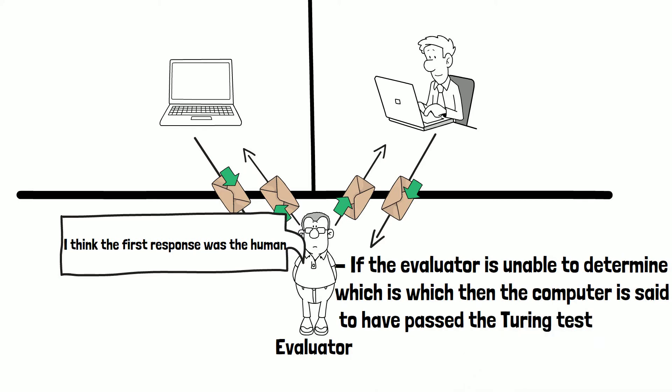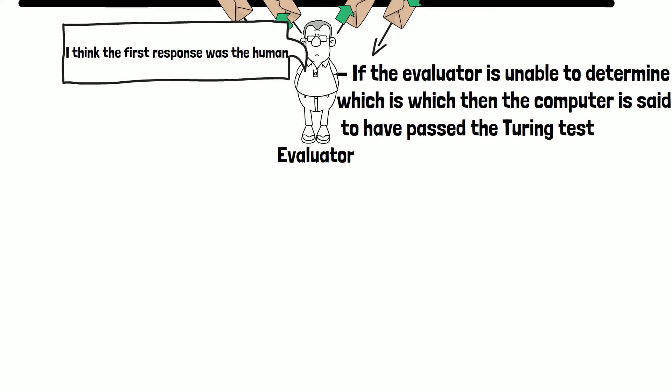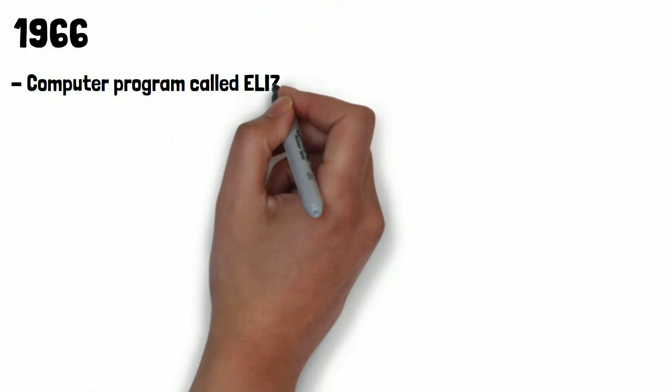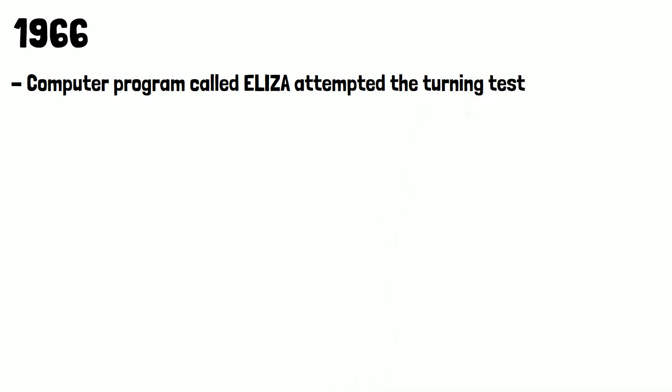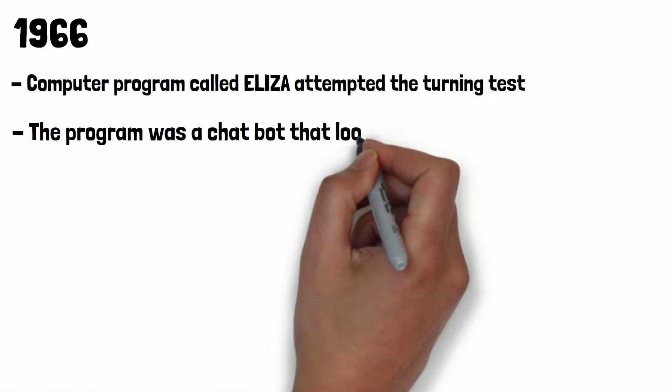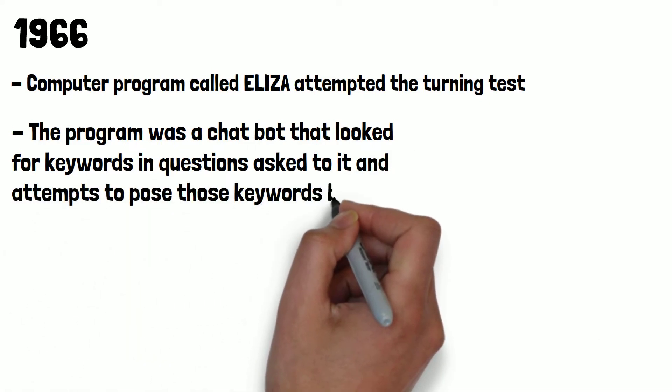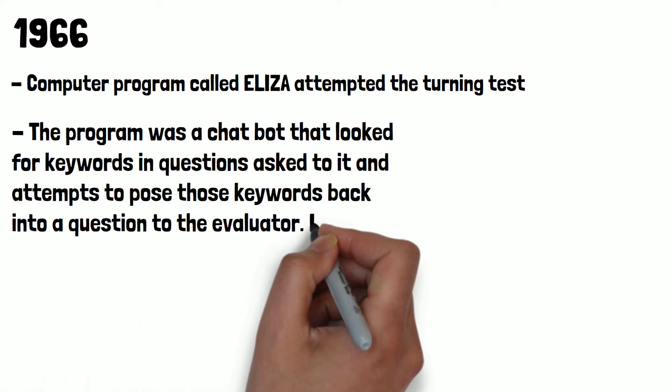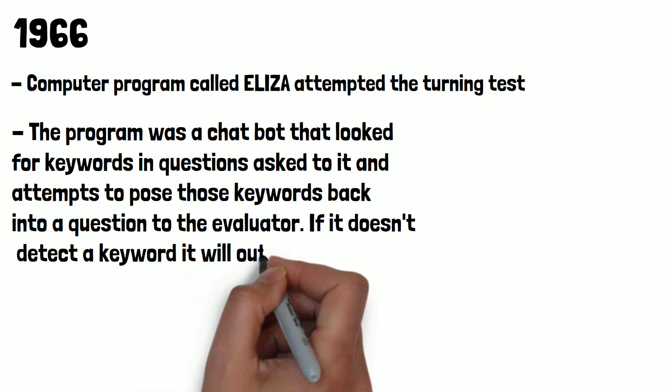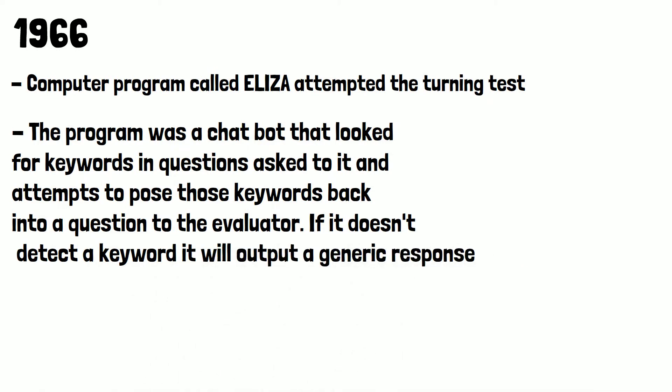So have any computers managed to pass the Turing test? In 1966, a program called ELIZA attempted the Turing test. The program was a chatbot that looked for keywords in questions asked to it and attempted to pose those keywords back into a question to the evaluator. If it didn't detect a keyword, it would output a generic response. It didn't fool enough evaluators to pass the Turing test.